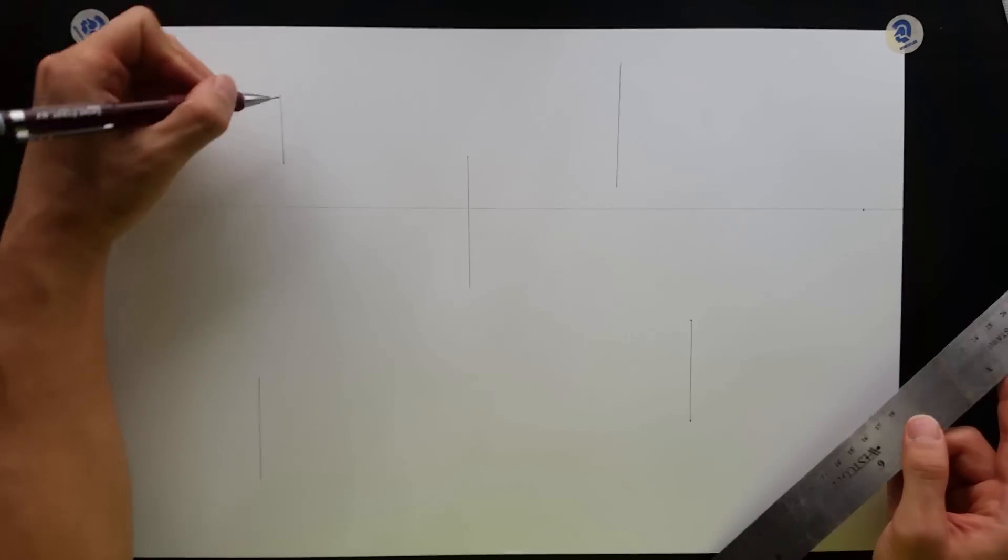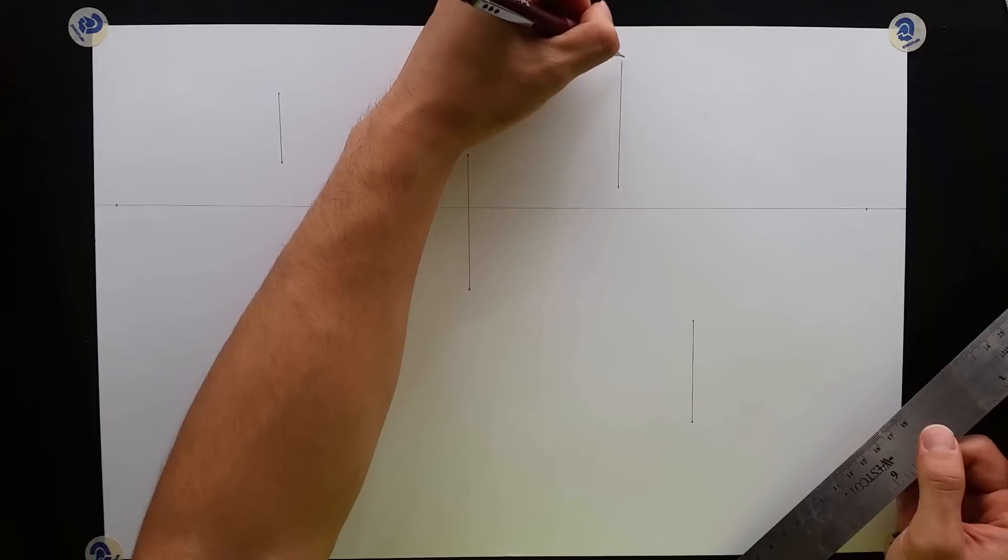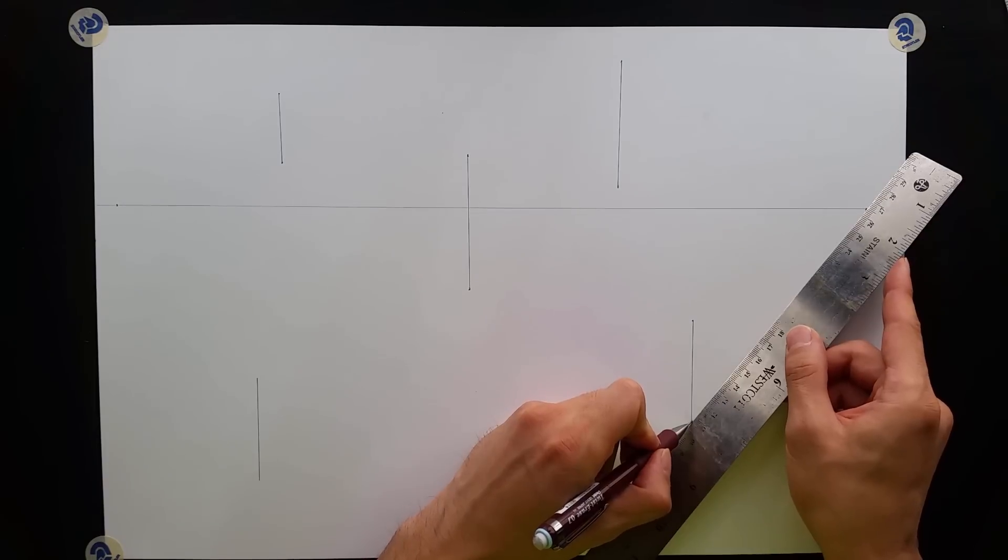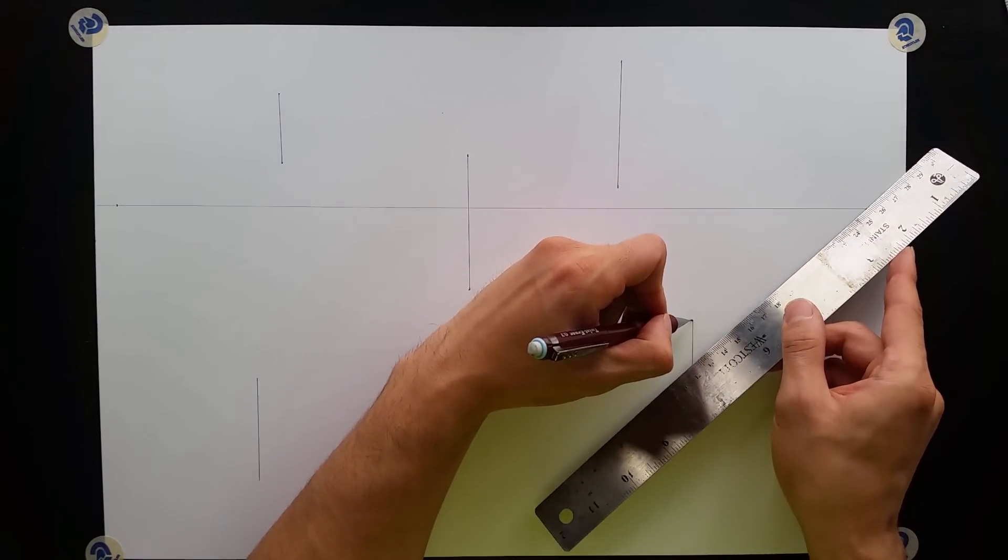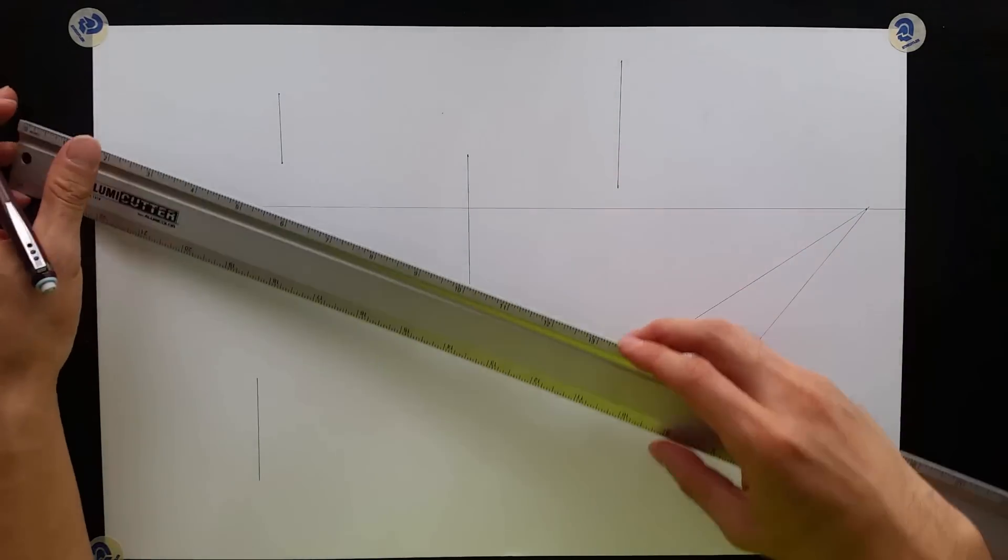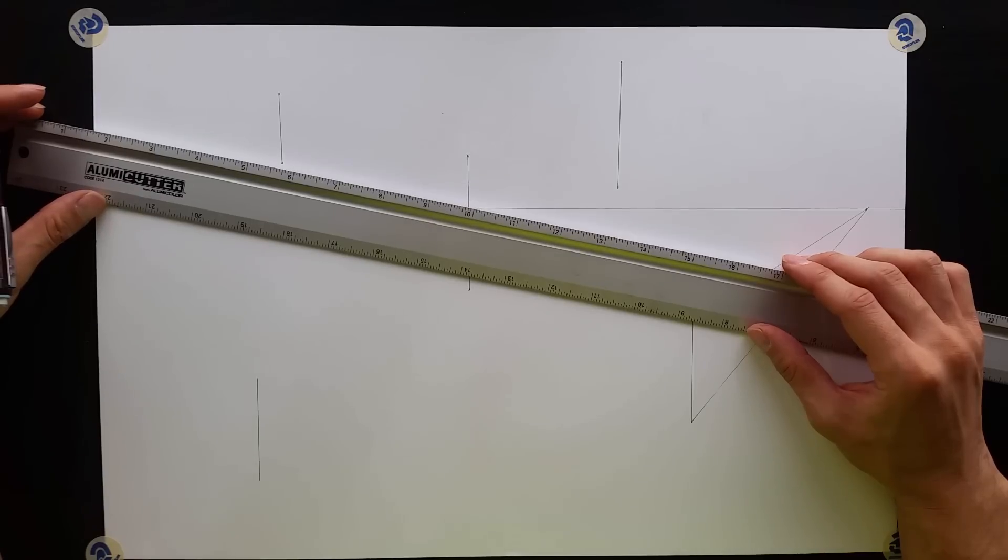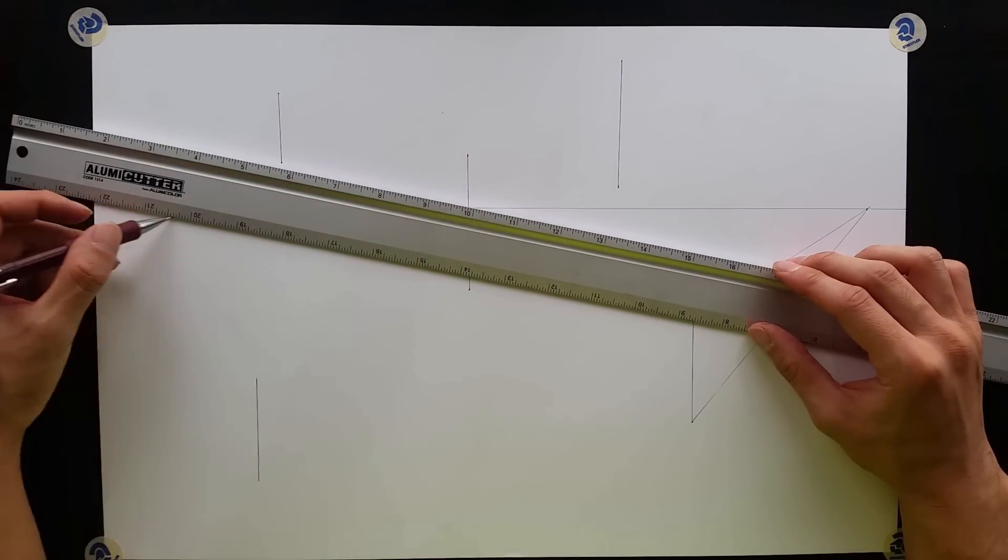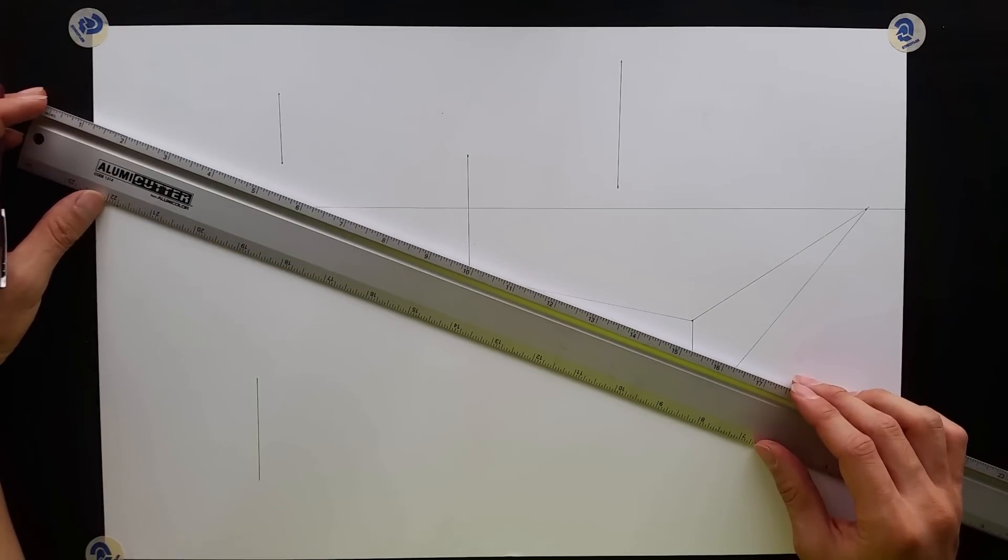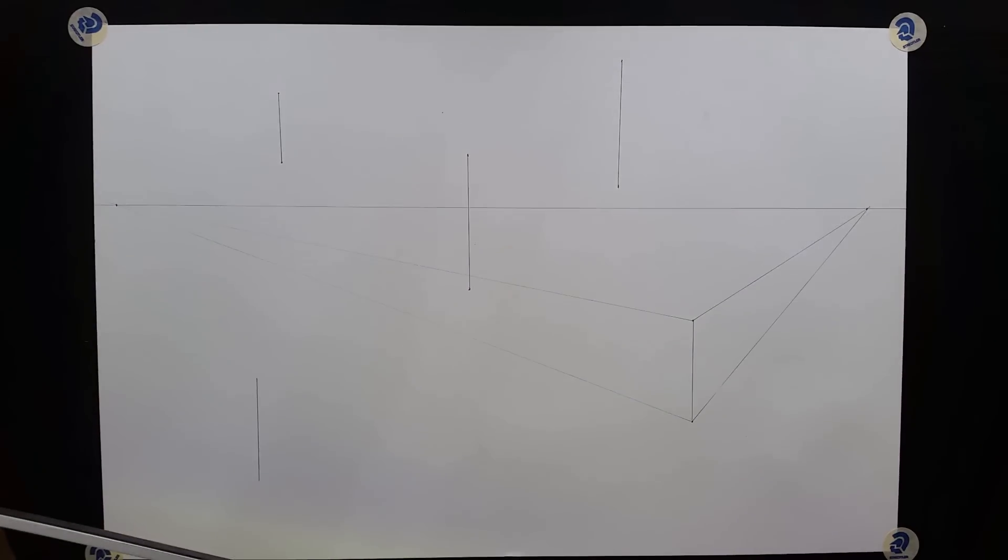So once you've got your vertical lines, then we're going to just connect up the points. Bottom goes to the right side, top goes to the right side, bottom and top goes to the left side. Just line up those two dots. And I'm trying to be light with my pencil because these are just guidelines pretty much. Try to hit those points.